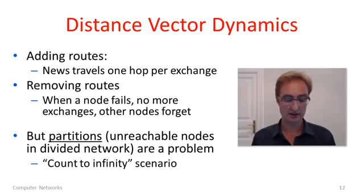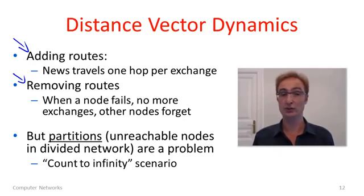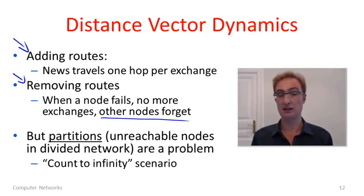So in distance vector, you should imagine that in the dynamics here, in terms of adding routes, news about new possible routes is being added in 1-hop per exchange. Every exchange we were finding information about routes which were 1-hop longer. We haven't yet got to when you remove routes, but I'll tell you when you remove routes, what happens is that a node fails. So it doesn't send a message saying you can no longer use any of my routes. What happens instead is that other nodes need to forget and time out the information over time if it's not reiterated.